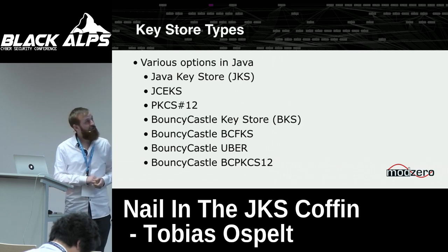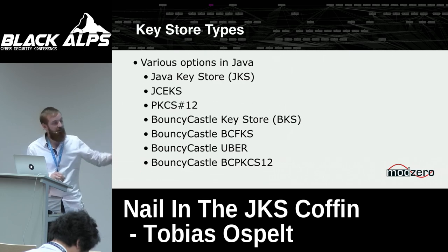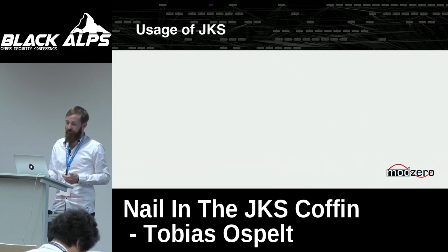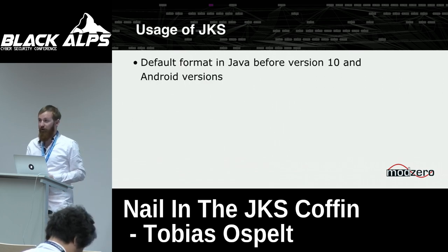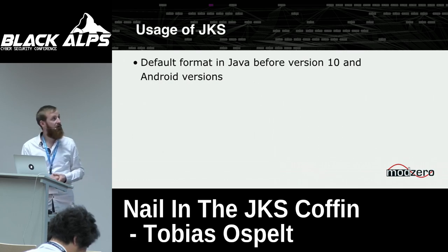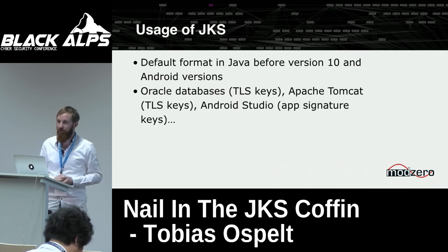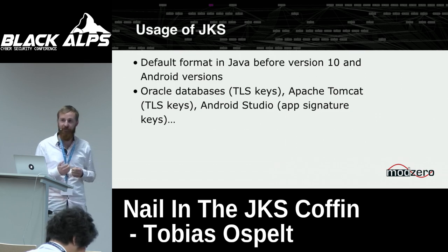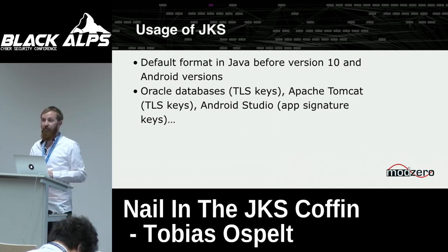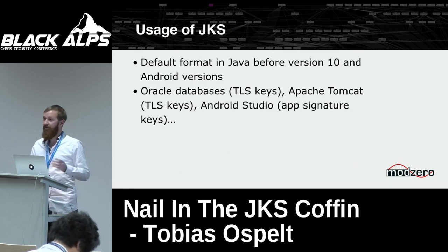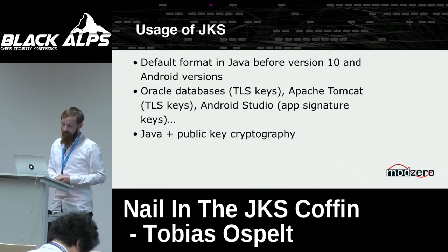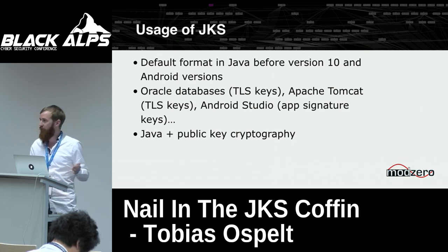In Java you have different options. JKS is the oldest format, but there's an entire list of other formats. JKS is used nearly everywhere asymmetric crypto is used — it's the default format in Java before version 10 and is in all Android versions. Oracle databases store their TLS keys in JKS files, Apache Tomcat as well, and when you publish a new Android app you have to sign it with a key, so a JKS file is created for you.